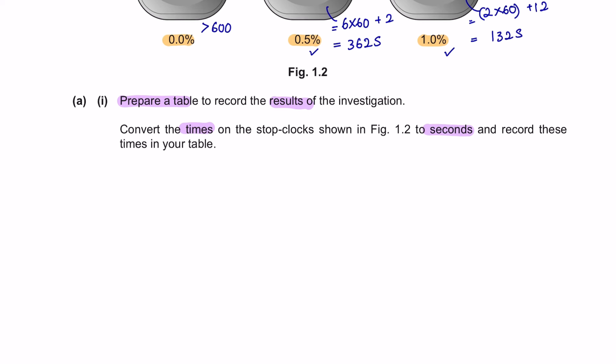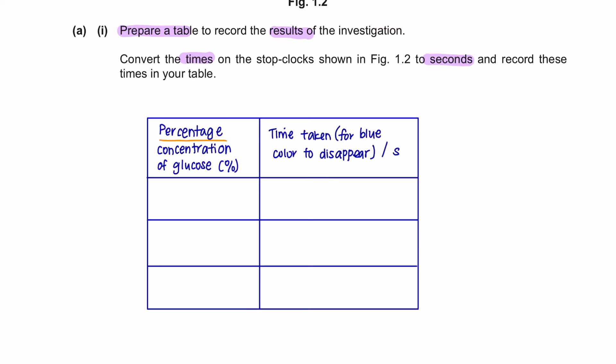Now we can prepare the table. You're going to have the percentage concentration of glucose in one column and the time taken for the blue colour to disappear in the other column. Do not forget to include your units. Fill in the values obtained for all three different concentrations of glucose.